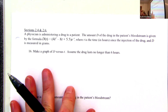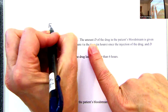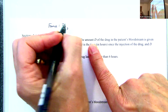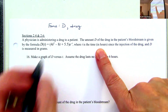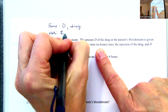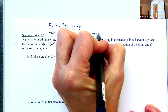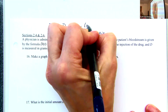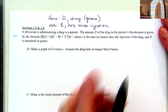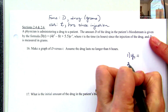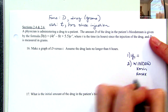A physician is administering a drug to a patient. The amount D at T—so our function is D and the variable is T, which is the time in hours since injection, and D is measured in grams. We already have that formula in our calculator. It's asking us to make a graph, so we use Window with X minimum zero and X maximum six, since it's no longer than six hours.